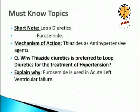Must-know topics: Loop diuretics and furosemide are very important short notes — please prepare these. For the exam question on thiazides as antihypertensive agents, don't just write the two mechanisms — start with an introduction: what is thiazide, its site of action, mechanism of action, and then how it manages hypertension. Writing a proper introduction before the answer is very important if you want to get really good marks.